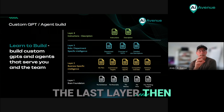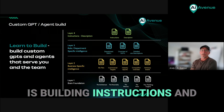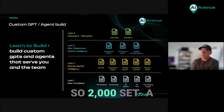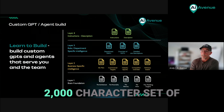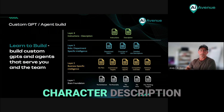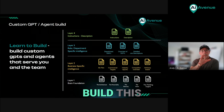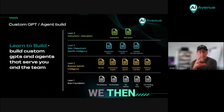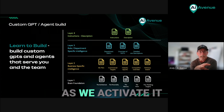The last layer is building instructions and a description — a 2000-character set of instructions and then a 300-character description. Once people build this custom GPT for themselves, we then activate it.